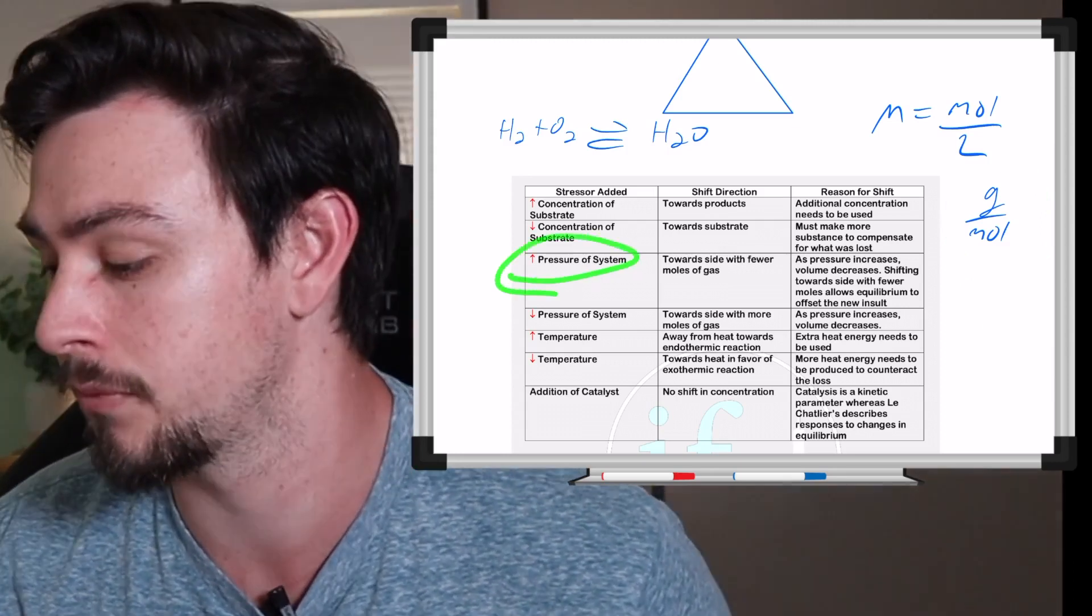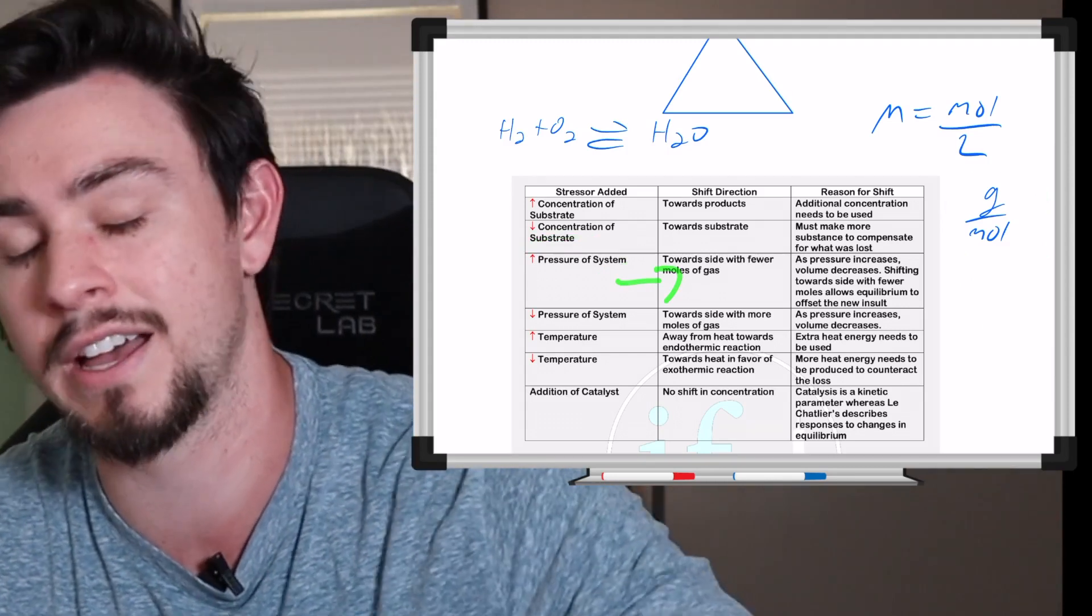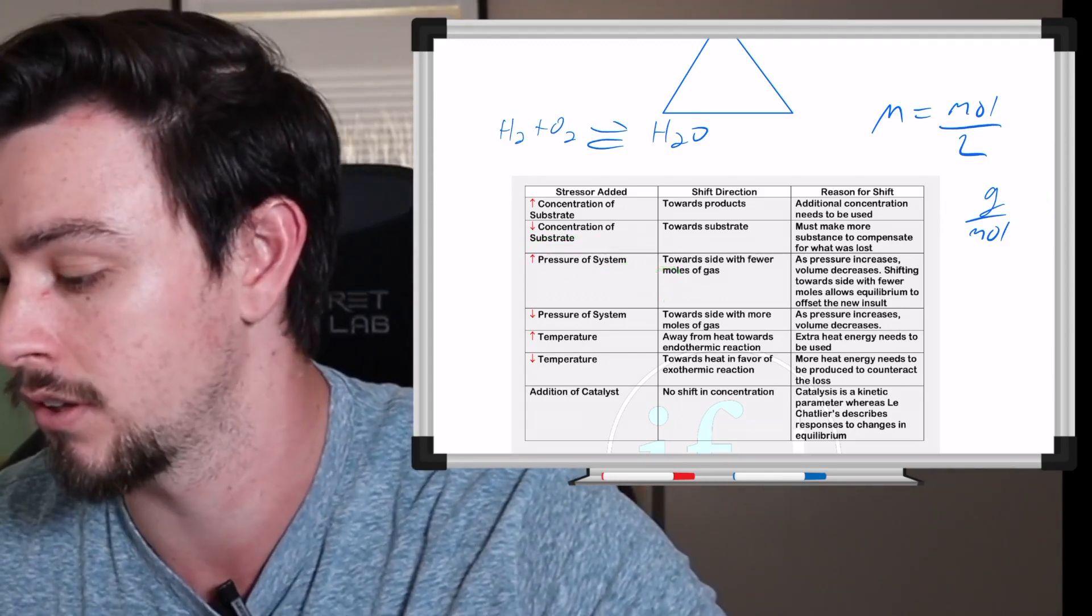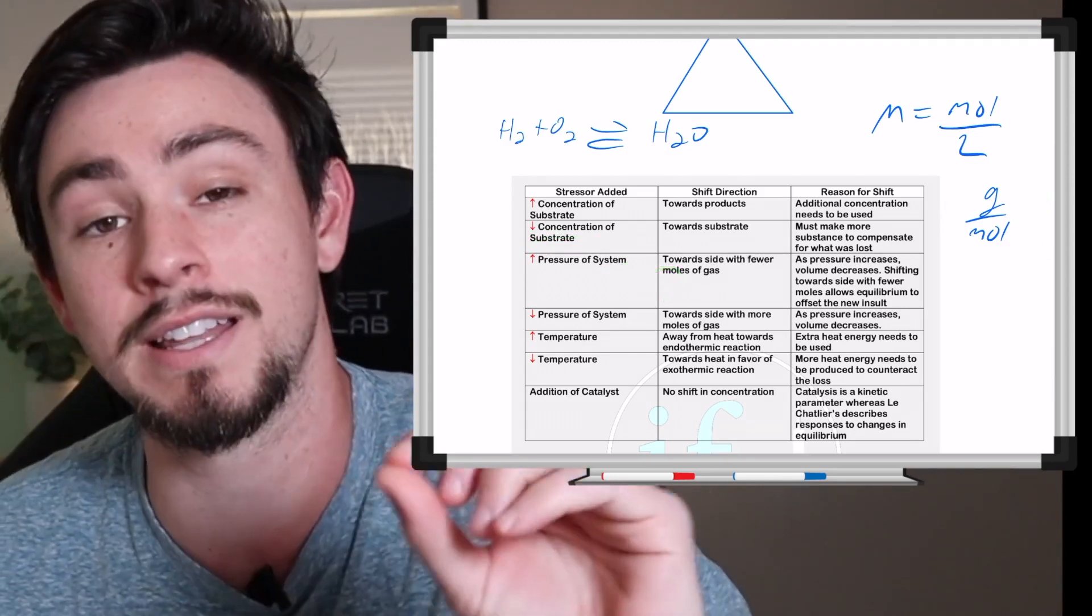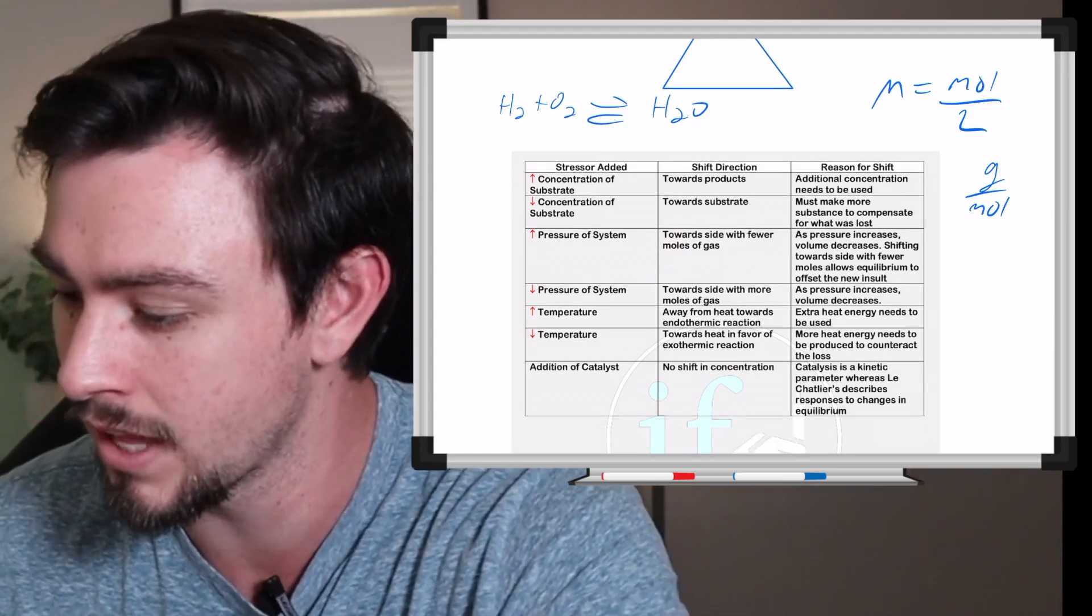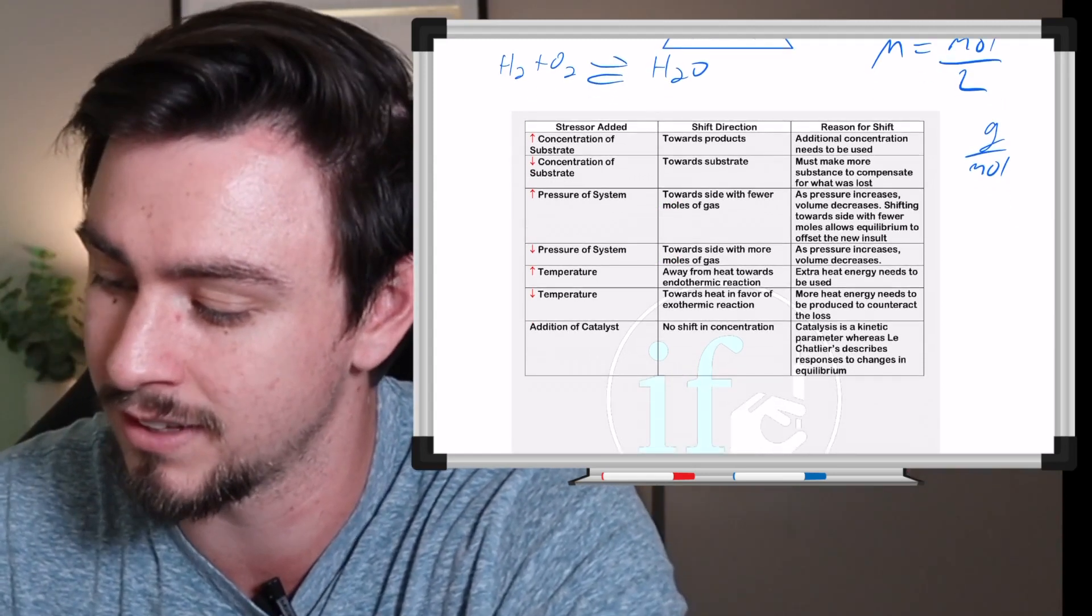So you may have to use either one of those to determine which one has more moles, and if you increase the pressure, you're going to shift towards the side with fewer moles of gas, excuse me. And the reason for that makes a lot of sense.